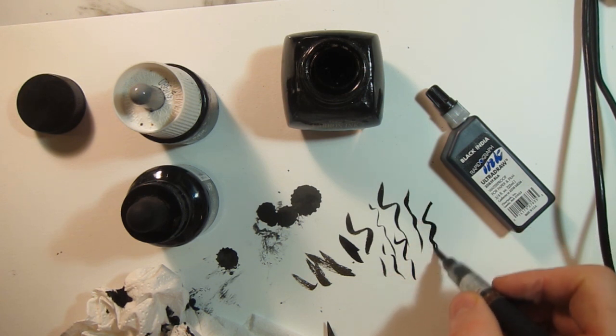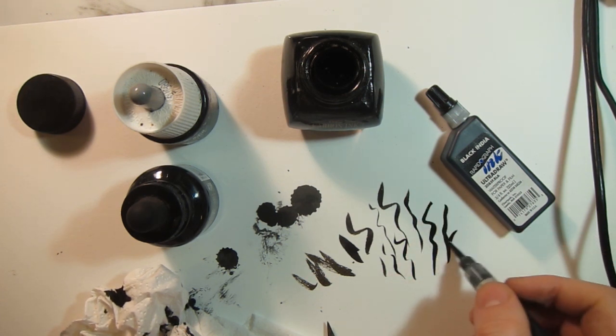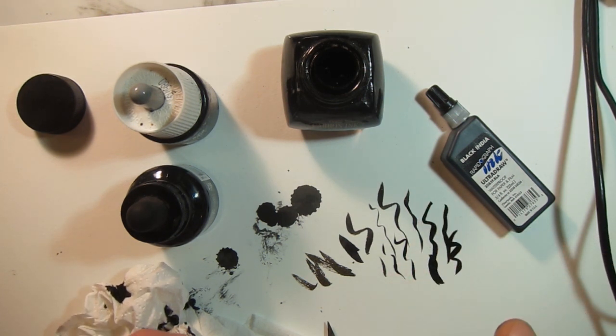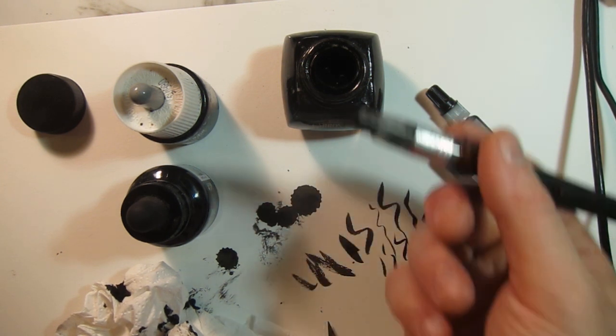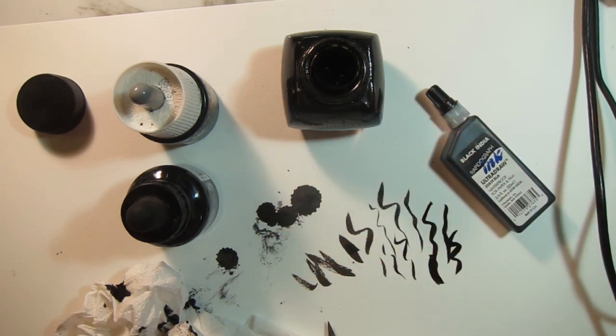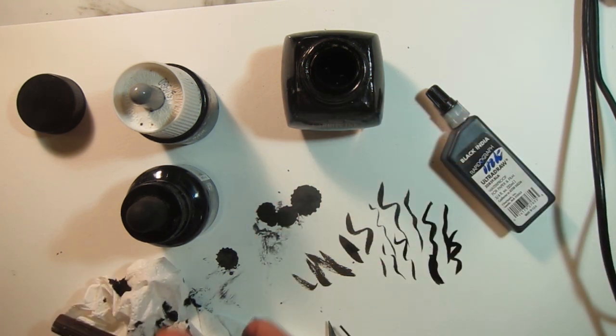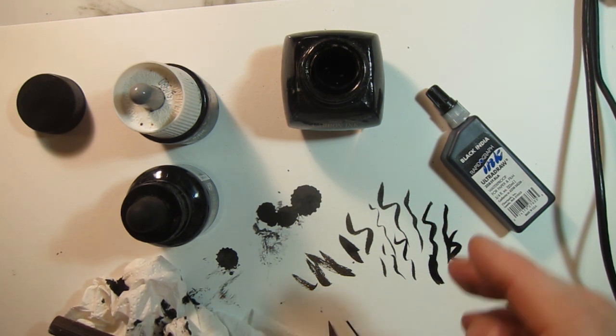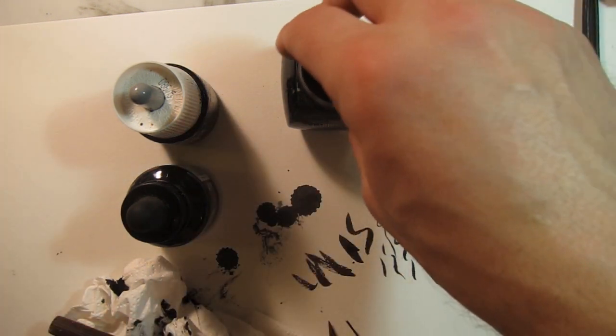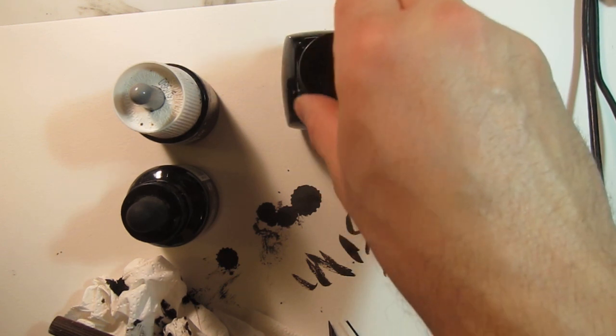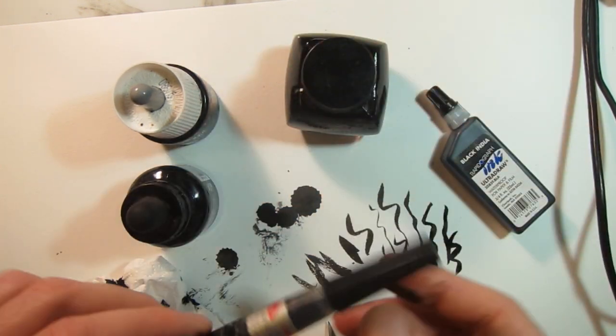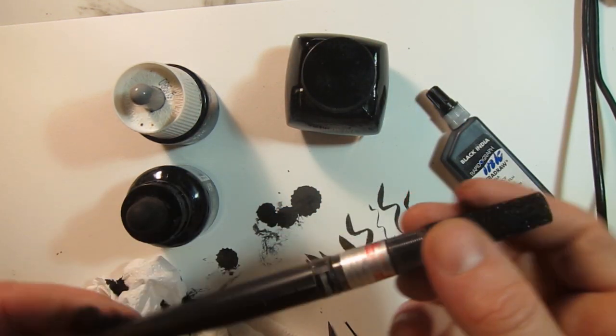So we will take a little while to really conclude this works well. My concern with the Platinum Carbon Black is it might flow too much. It's a thinner ink, so it could have the problem of being a little too wet. But I know that it won't have the problem this did, which was ultimately to get kind of clogged.